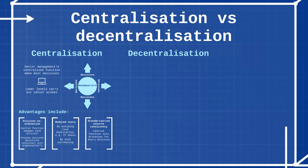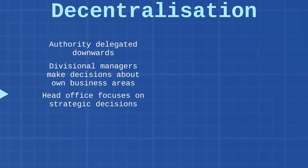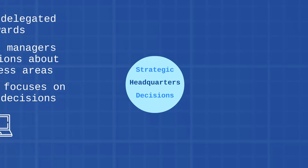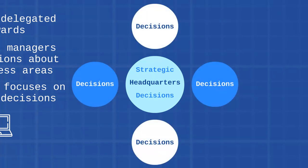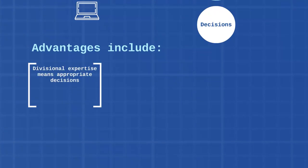Now we turn our attention to decentralization. If you know what centralization is, you can probably guess: it's simply when authority is delegated downwards to the divisional managers or lower level managers so that they can make their own decisions about their areas of the business, while head office can focus on strategic decisions. For example, if IT were decentralized, local managers would make their own decisions about how much they use IT, what they purchase, and who they purchase it from — quite different from centralization. In pictorial form, headquarters handles strategic decisions while all the divisions make their own decisions.